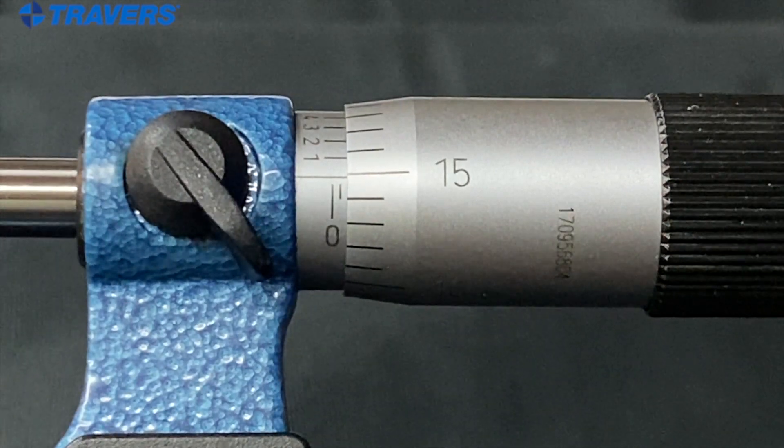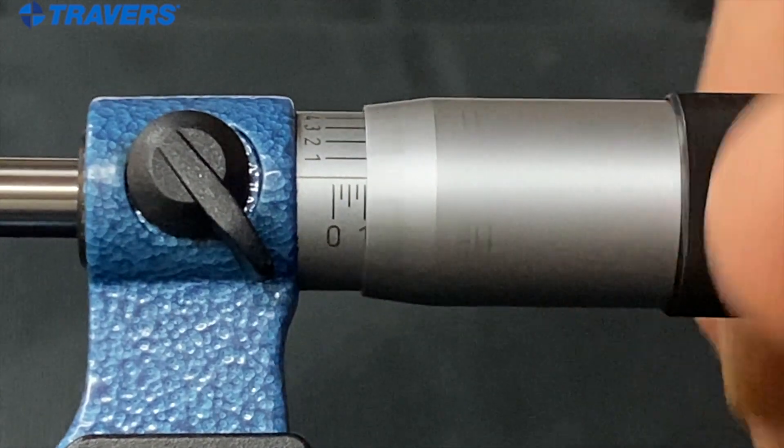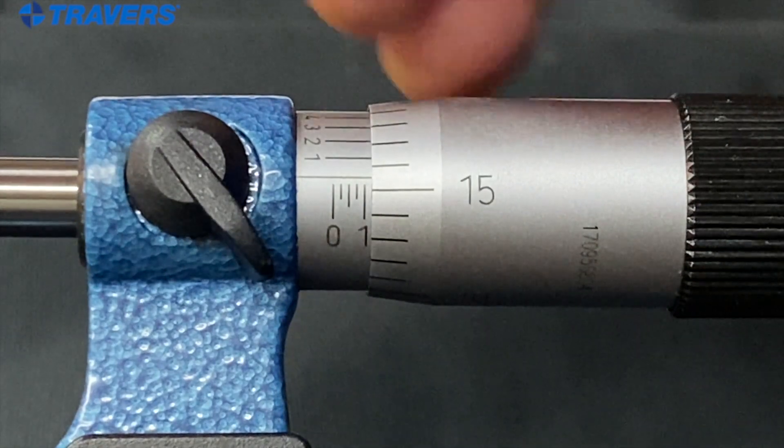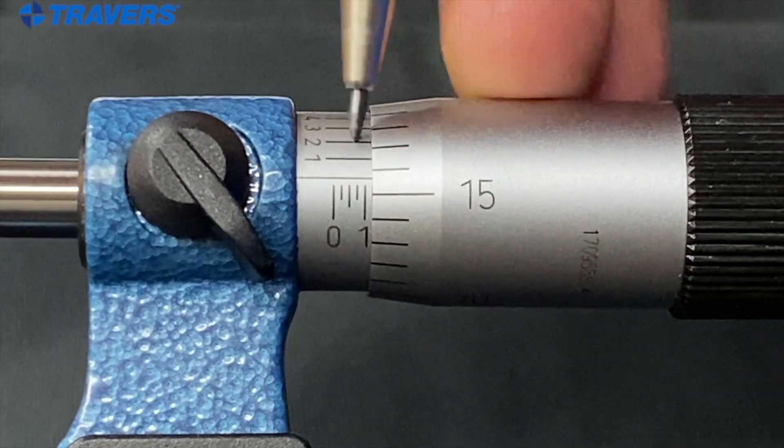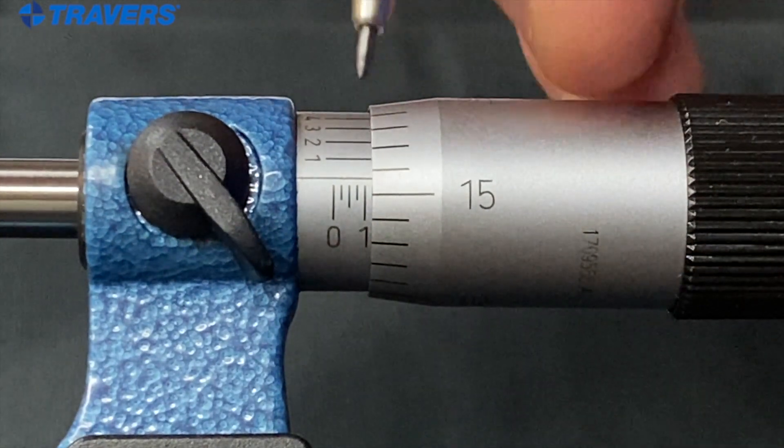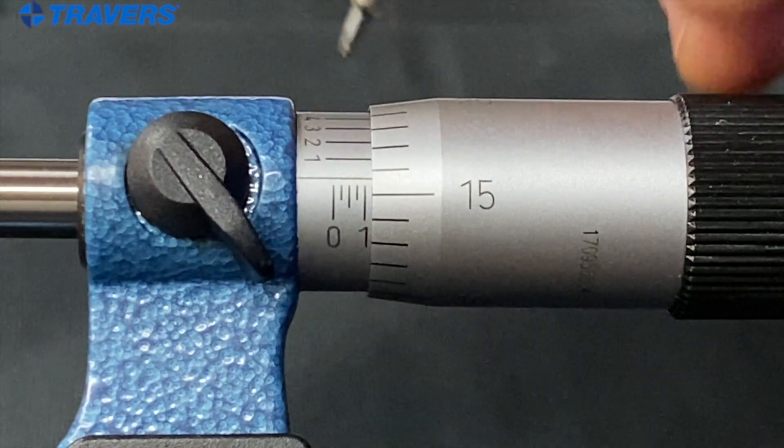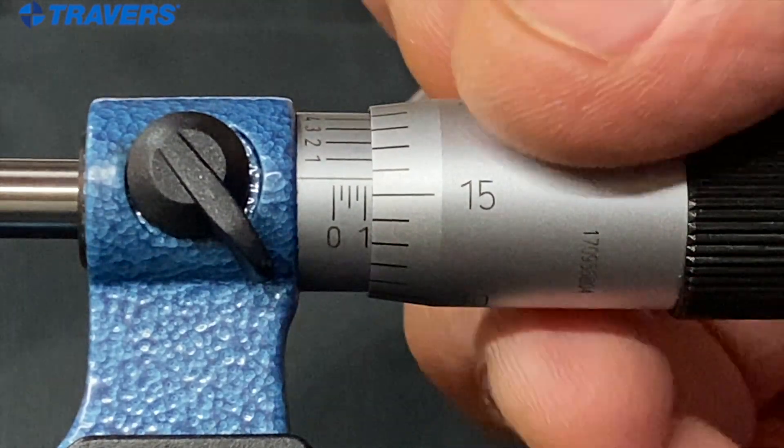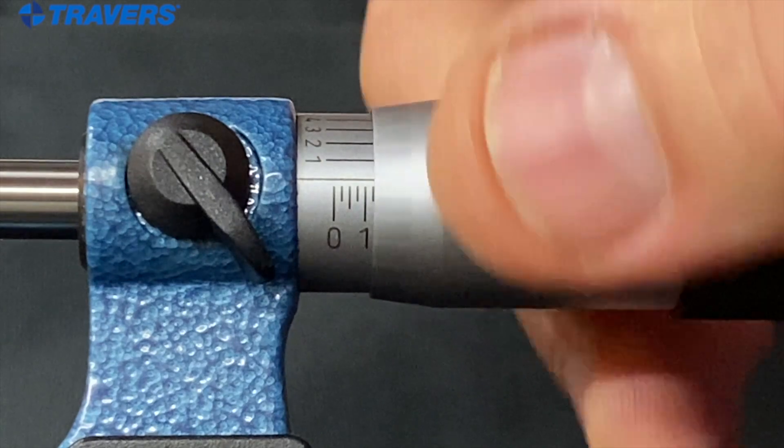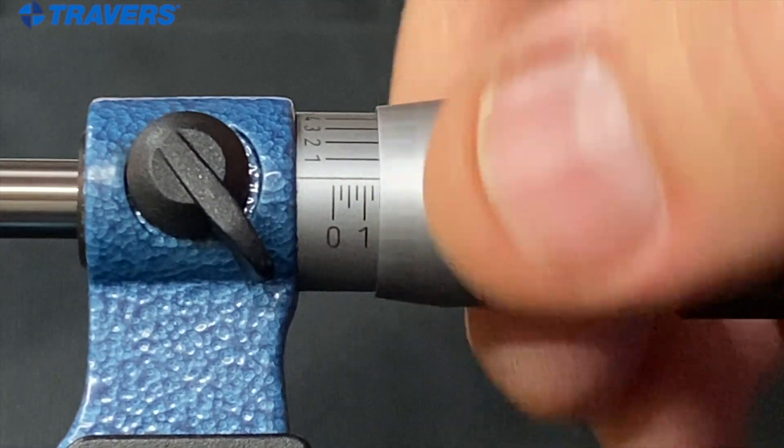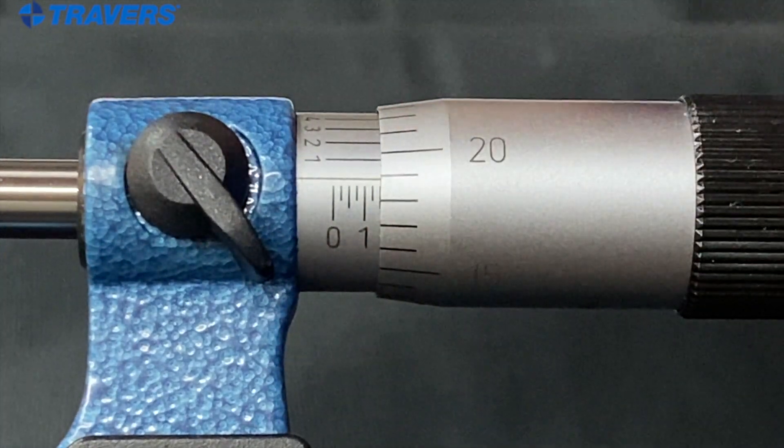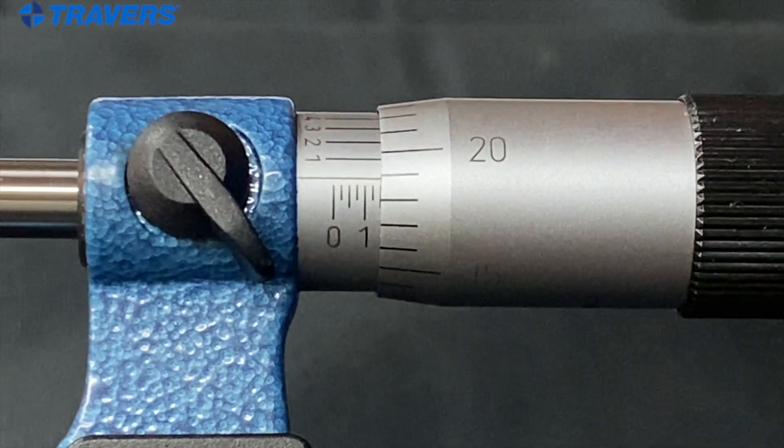So let's figure out how to use this thing or how to read it. First thing I'm going to mention is that this part with these numbers on it going around the back is the sleeve and this is the thimble that I'm turning. Those are the only two parts I'm going to mention for now because those are the two we're going to be using.